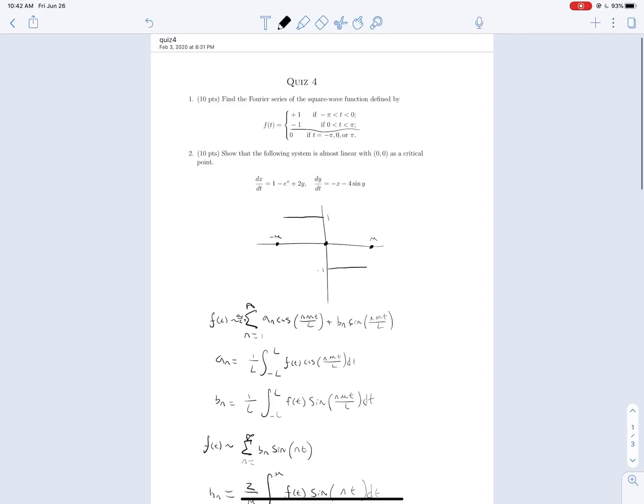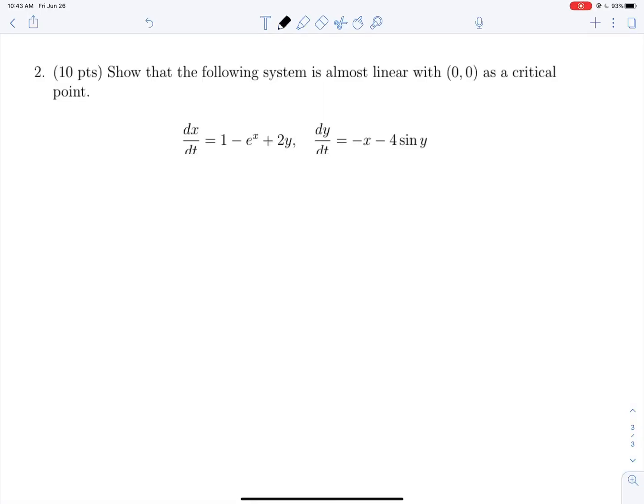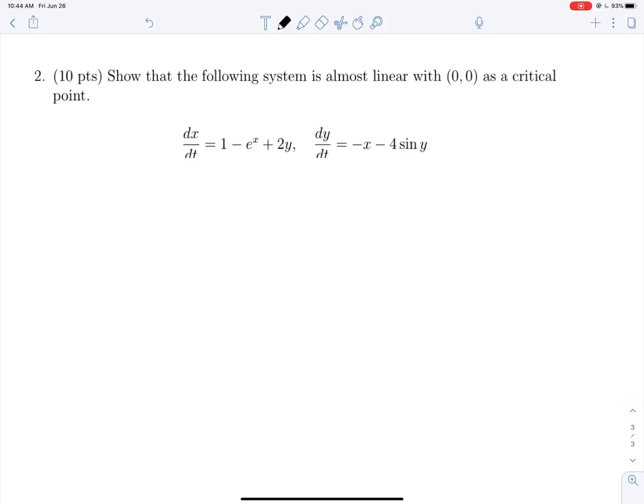Moving on to question 2. Let's show that the following system is almost linear with (0,0) as a critical point. We're going to work backwards, show it's linear at the very end, and linearize it ahead of time. To prove (0,0) is a critical point, any critical point must satisfy dx/dt and dy/dt equals 0. So 0 equals 1 minus e^x plus 2y, and 0 equals negative x minus 4 sine y.